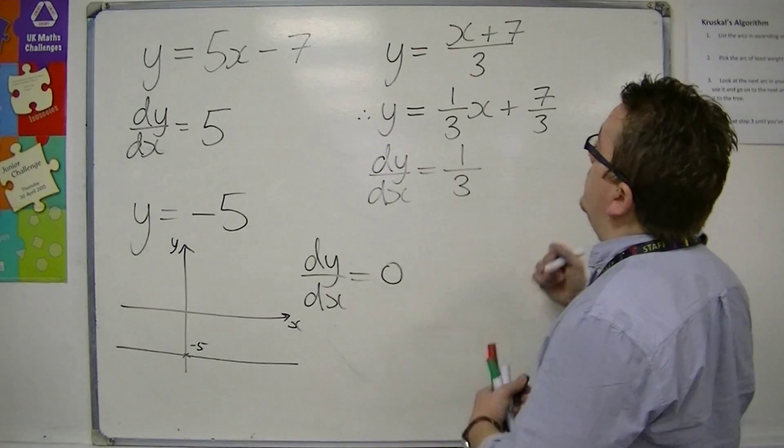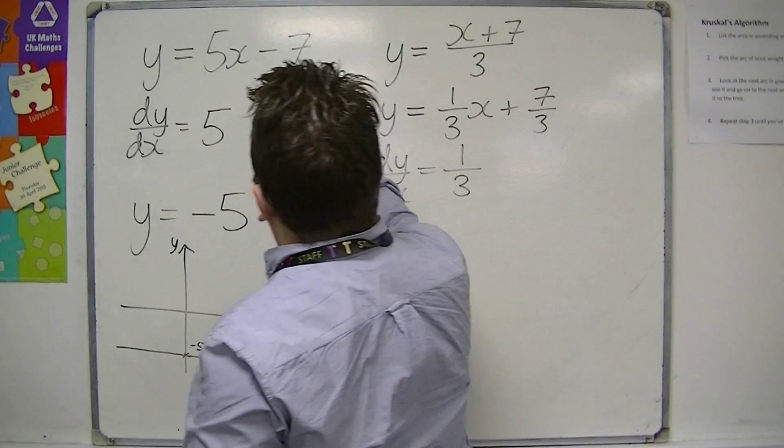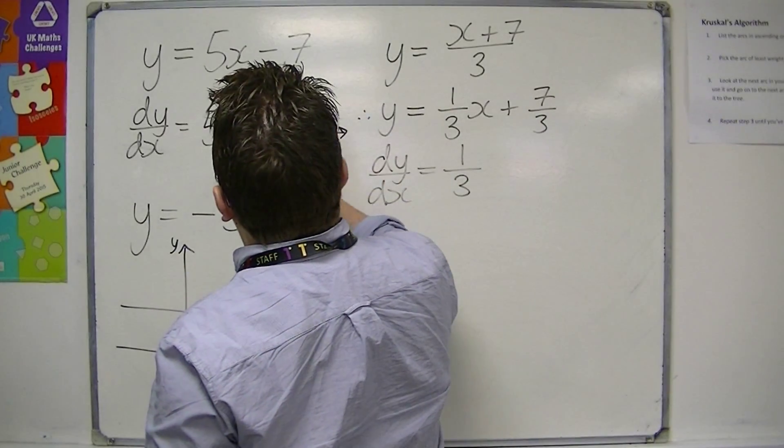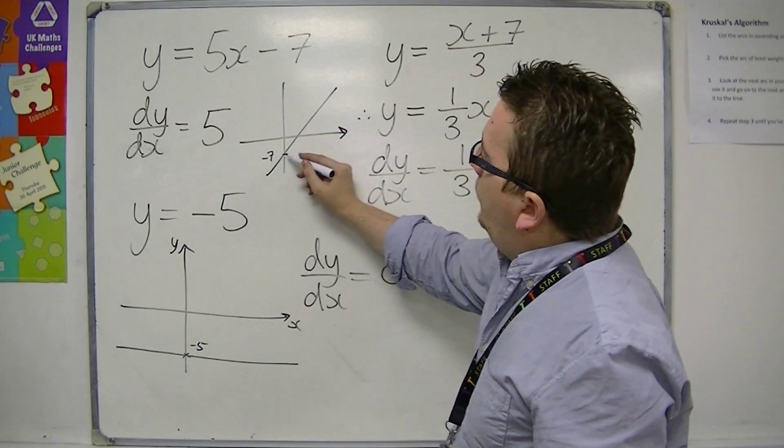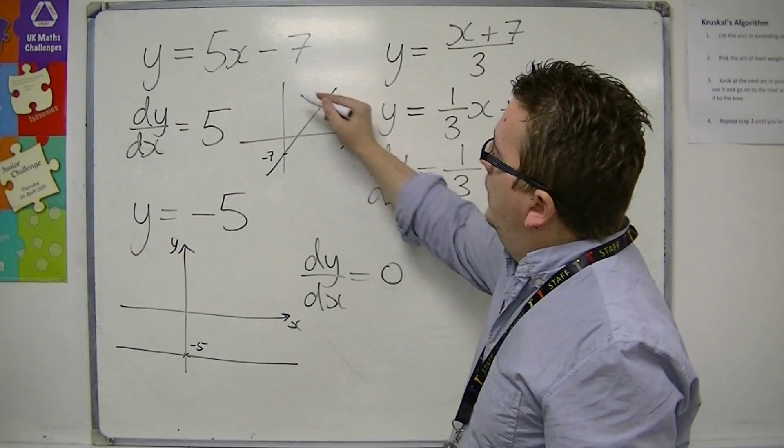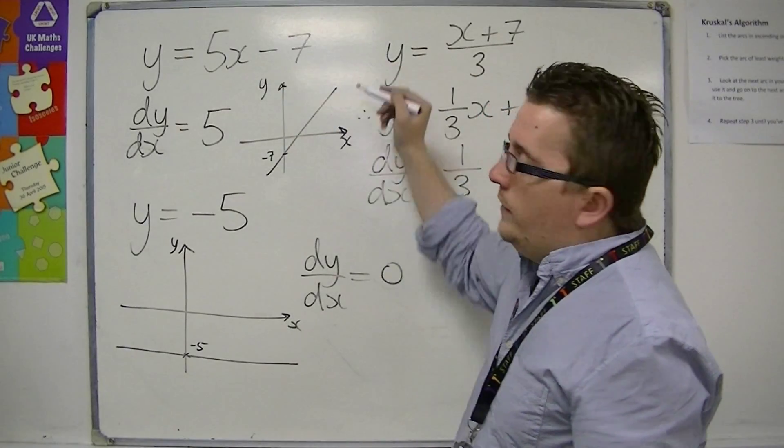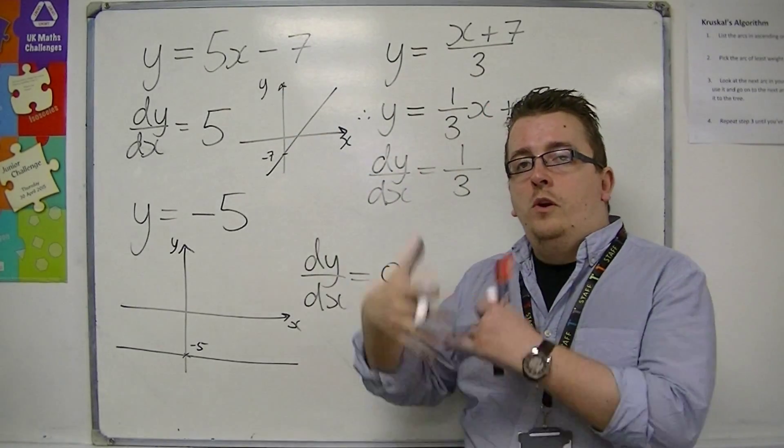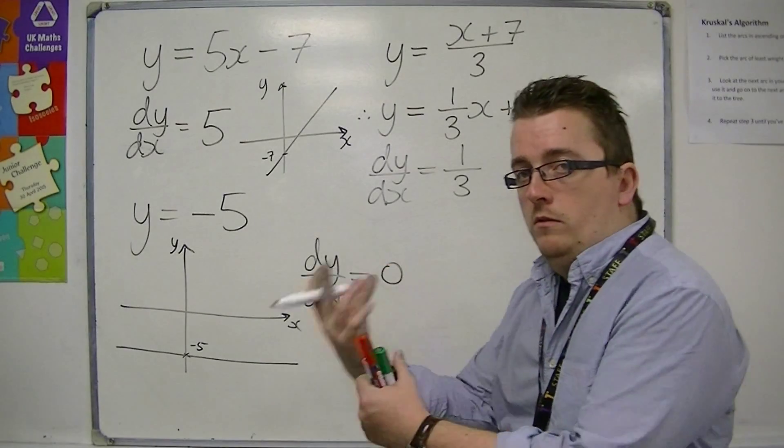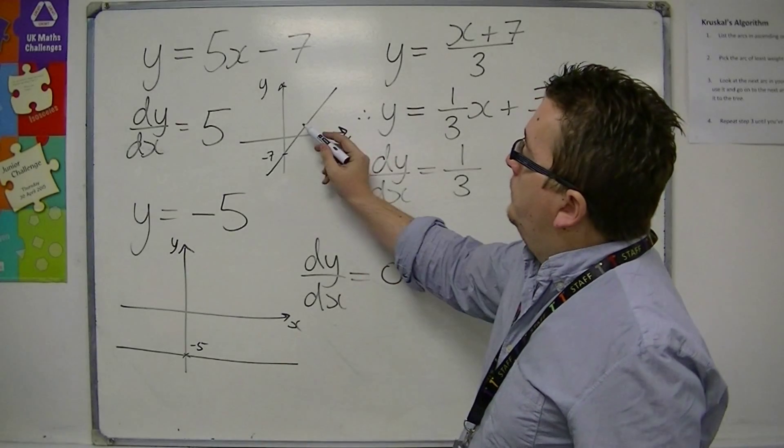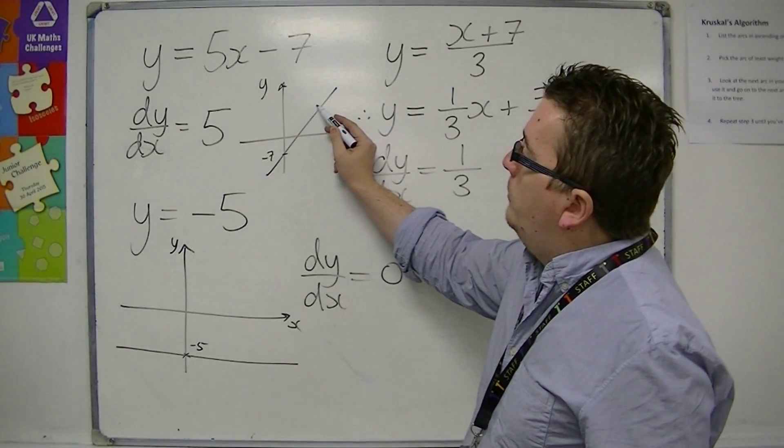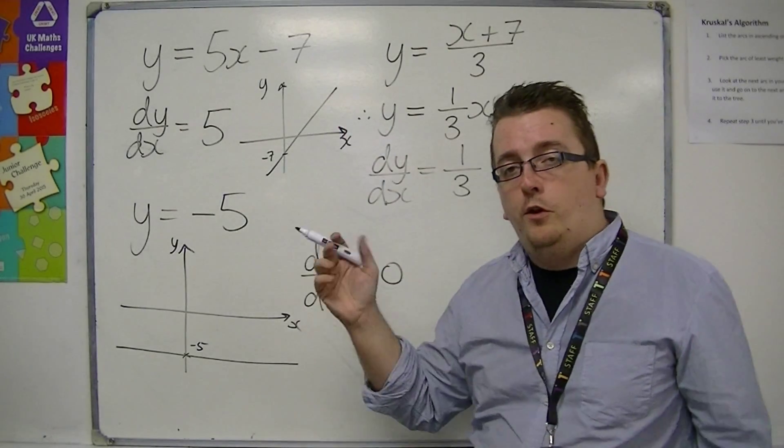While the gradient of a line like this, 5x minus 7, you can see that as x increases, y increases. And so the rate at which y is increasing is 5. So for every 1 along it goes up 5. 1 along, 5 up. 1 along, 5 up.